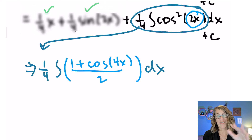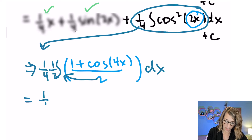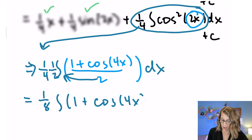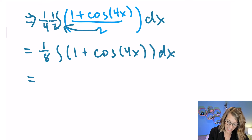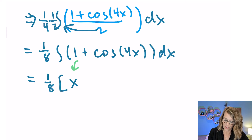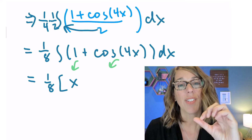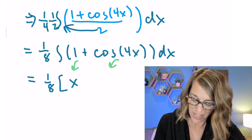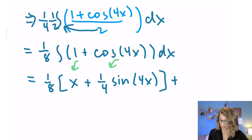This is nicer — nothing to square out. Bringing the 1/2 out front, (1/4)(1/2) = 1/8. Inside I have 1 plus cos(4x), both ready to integrate. The integral of 1 is x. For cos(4x), using the same linear inner function shortcut, I bring out 1/4 in front, giving (1/4)sin(4x). So altogether: (1/8)[x + (1/4)sin(4x)] + c.